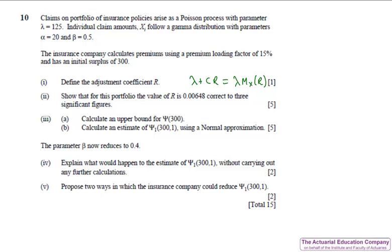In part 2 we have to show that for this portfolio the value of R is 0.00648 correct to three significant figures. Many students correctly obtained the equation but simply substituted in R is 0.00648, noticed the answer was roughly zero and said that's good enough. But this doesn't prove that this answer is correct to three significant figures. Just like in April 2012 what you actually have to do is substitute in 0.006475 and 0.006485. Notice that the sign changes and so the answer must be 0.00648 to three significant figures.